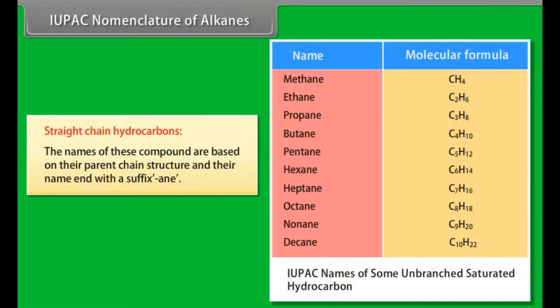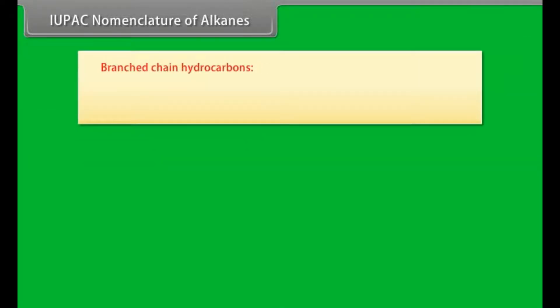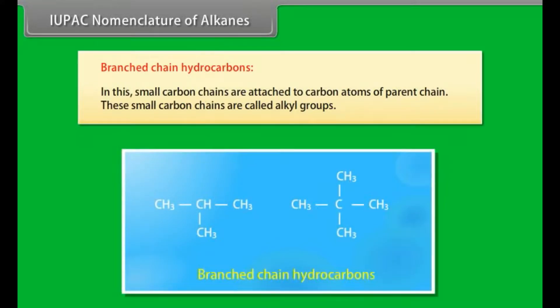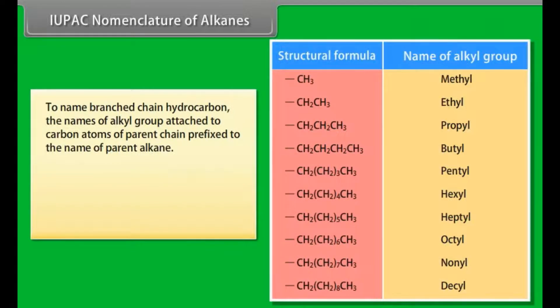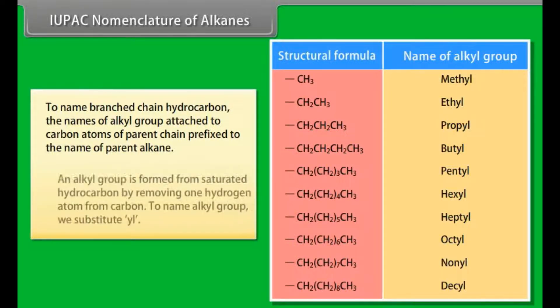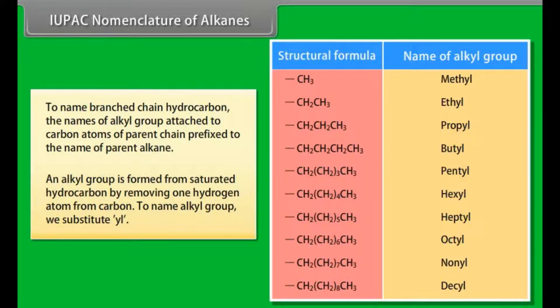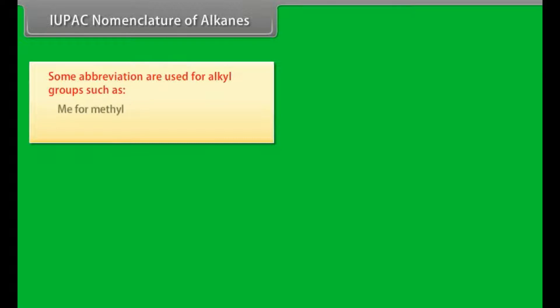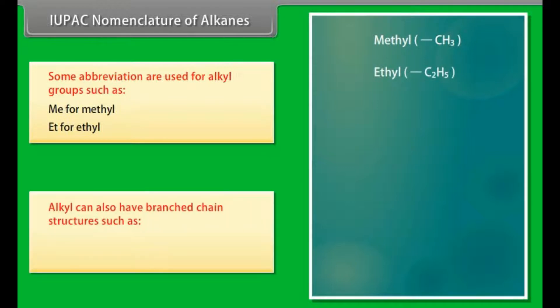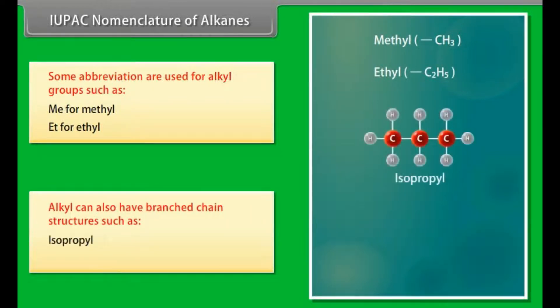IUPAC nomenclature of alkanes. Straight chain hydrocarbons: the names of these compounds are based on their parent chain structure and their name ends with the suffix -ane. Branched chain hydrocarbons: small carbon chains are attached to carbon atoms of the parent chain; these are called alkyl groups. An alkyl group is formed from a saturated hydrocarbon by removing one hydrogen atom. We substitute -yl to name the alkyl group. Abbreviations such as Me for methyl, Et for ethyl are used. Alkyl groups can also have branched chain structures such as isopropyl and tert-butyl.